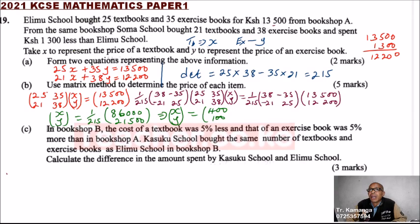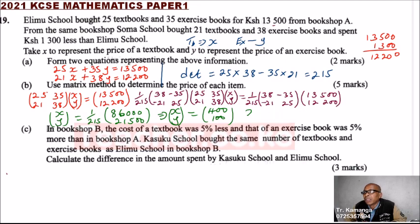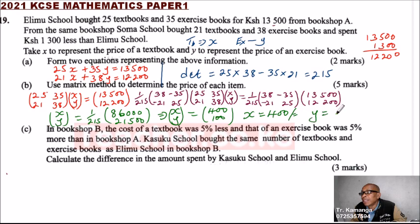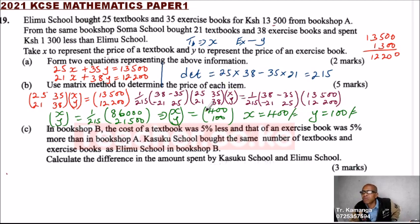Very good. That means X equals 400 shillings — that is the price of a textbook — and Y equals 100 shillings, which is the cost of an exercise book. If you do that correctly, you should be able to get the five marks.